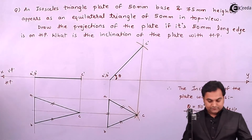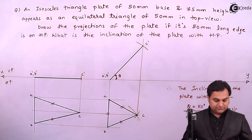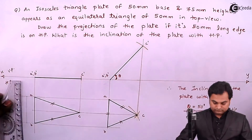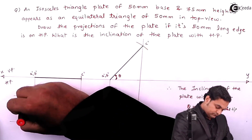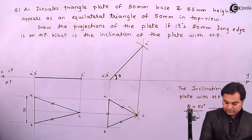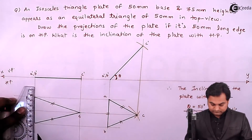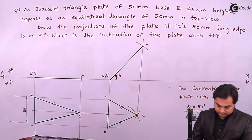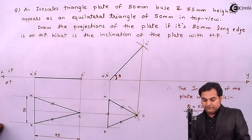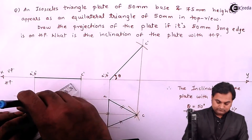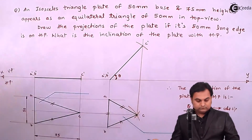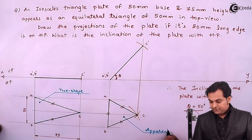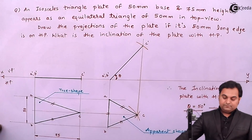Next, I'll give the dimensions: the base is 50 mm and the height of this isosceles triangle is 75 mm, and here we have the equilateral triangle. This is the true shape and here we have the apparent shape. With this, the problem is completed.